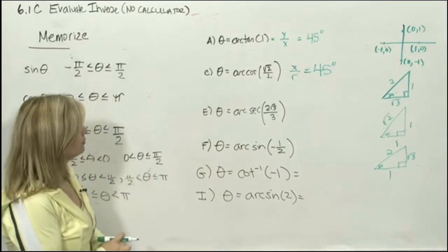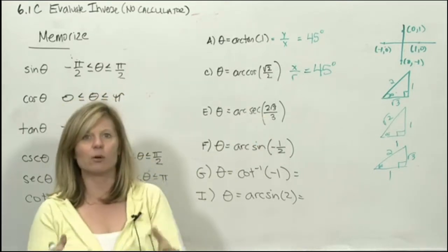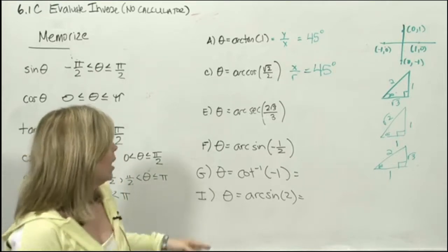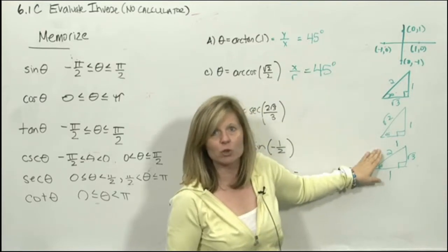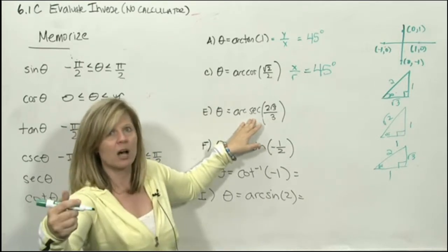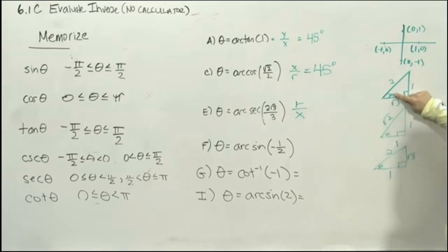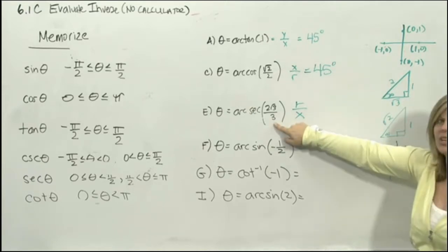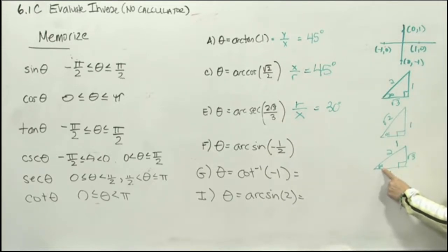For arcsec(2√3/3), the number is positive so the angle is in quadrant one. The only place we get √3 is the 30 or 60 degree triangle. Secant is the reciprocal of cosine, so it's r over x. On the 30 degree triangle, r over x gives 2 over √3, which equals 2√3/3. On the 60, r over x would give 2 over 1, which is just 2. So the angle is 30 degrees.